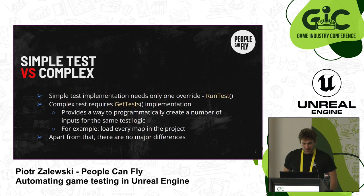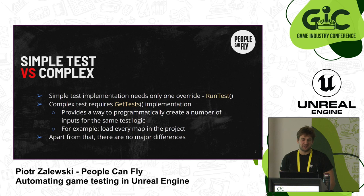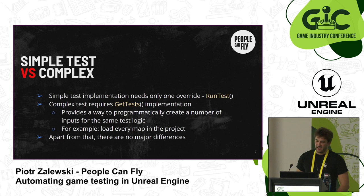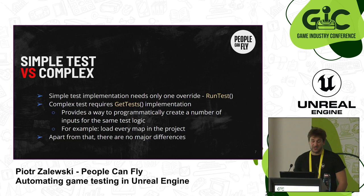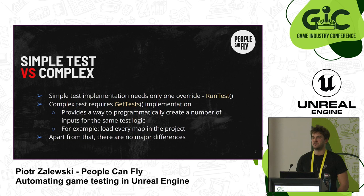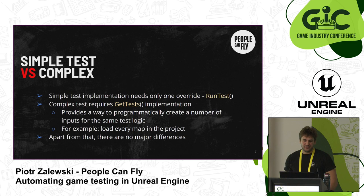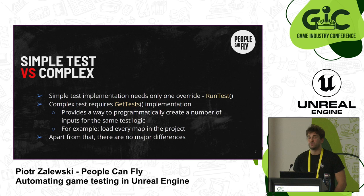Moving on to discrepancies between simple tests and complex ones — there are not that many differences. The simple test requires you to only implement test logic. But if you would like to implement a complex test, you have to create an override for another function called getTests. In this function you basically create the arguments that will be run for each instance. A good example: if you want to test whether every map in the content folder loads, in getTests you'd iterate over that folder, gather map names, and then use those names to run the instances of runTest. Apart from using a different macro, there are no more differences between the two.